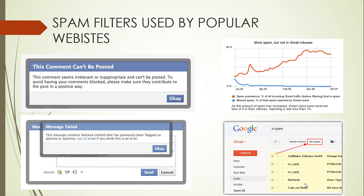Here are some screenshots showing the robustness of spam filters used by Facebook and Google. Facebook reads through the contents of your comments and if it finds them inappropriate it would not allow you to publish them on the social network. The graph shows the robustness of Gmail's spam filter — the number of spam mails shown by the red curve is continuously increasing, yet Gmail users have received less than 1% of it in their inbox, shown by the blue line.